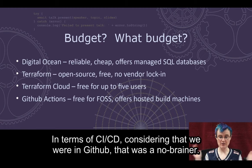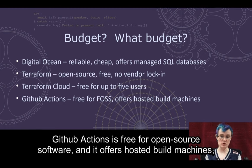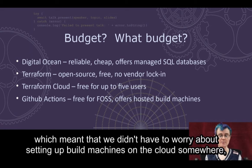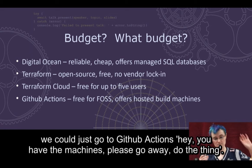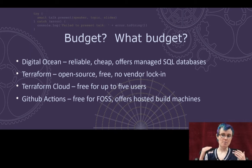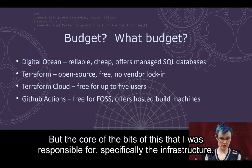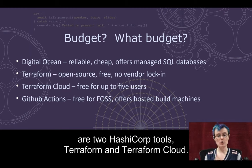In terms of CI/CD, considering that we were in GitHub, that was a no-brainer. GitHub Actions is free for open source software and it offers hosted build machines, which meant we didn't have to worry about setting up build machines on the cloud somewhere. We could just go to GitHub Actions and say, you have the machines, please do the thing. But the core bits I was responsible for — specifically the infrastructure — are two HashiCorp tools: Terraform and Terraform Cloud.